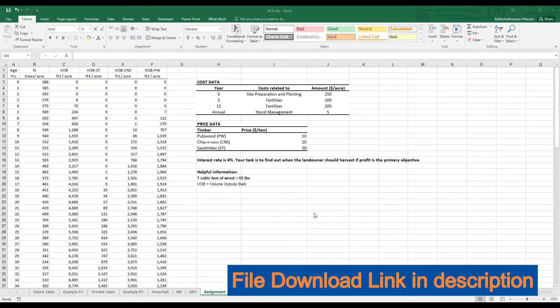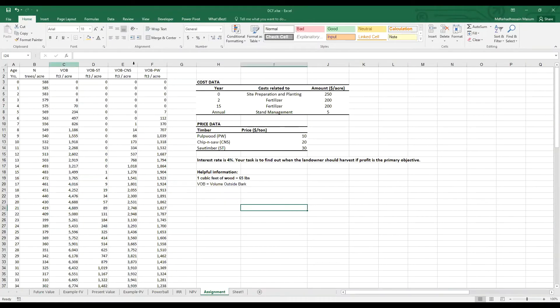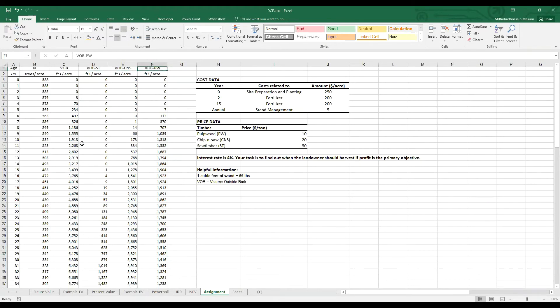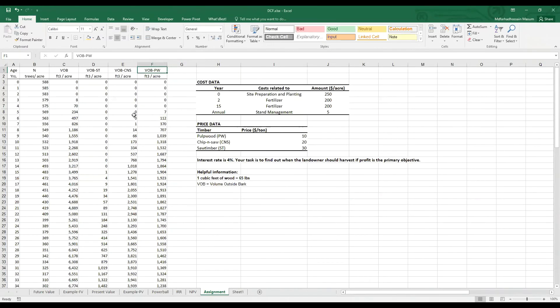Let's look at an assignment. You have growth and yield data for Loblolly Pine developed by Carbon Resources Science Center, University of Florida. You can see availability of different types of timber at a given standage up to 100 years. Costs and prices are as follows. Interest rate is 4%. Your task is to find out when the landowner should harvest if profit is the primary objective.